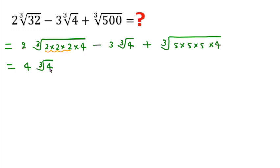And here cube root of 4, and minus here 3 into cube root of 4, and plus here also this 5 in group of 3. So this will come out as 5 outside the cube root, that is 5 and cube root of 4.